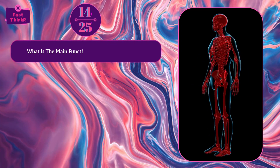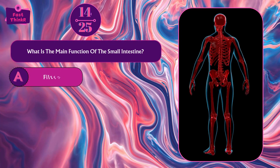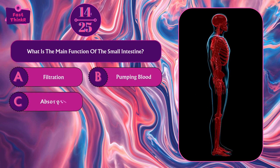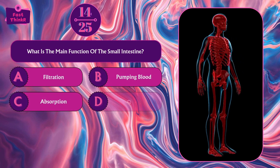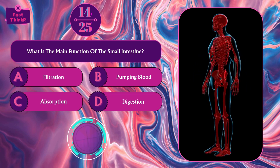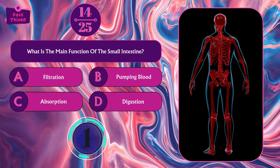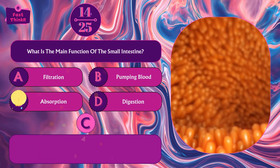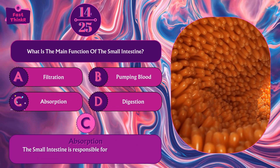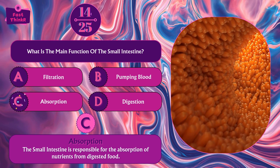What is the main function of the small intestine? Filtration, pumping blood, absorption, or digestion? Option C — absorption. The small intestine is responsible for the absorption of nutrients from digested food.